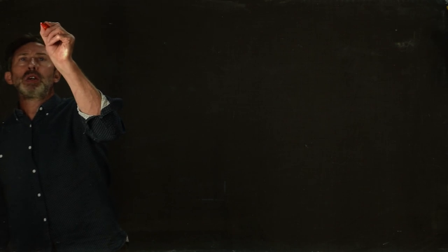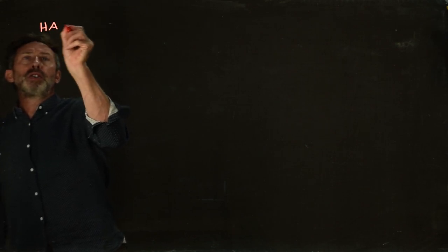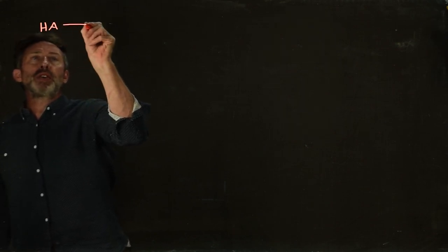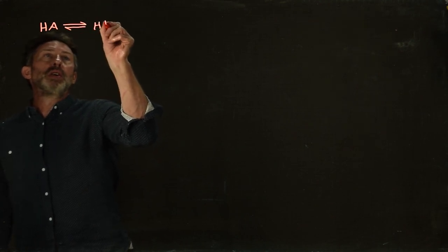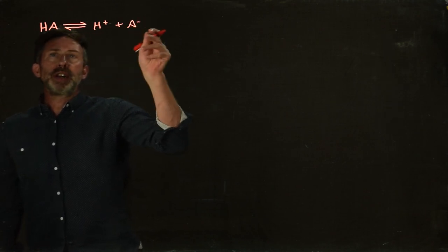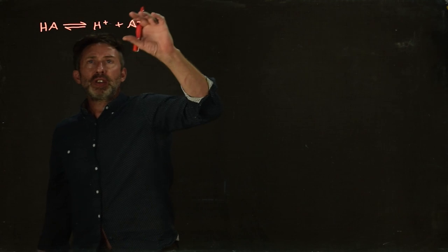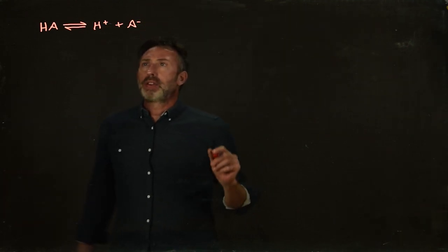So let's just look at a typical buffer. Here's a weak acid. It's a weak acid because it can dissociate to form H+ and A-. So this here is what's technically known as the conjugate acid, and this here is the conjugate base.